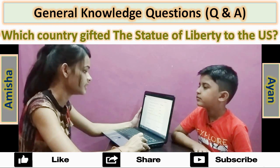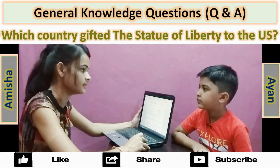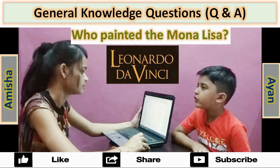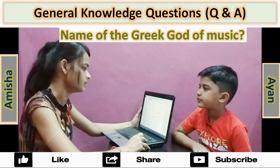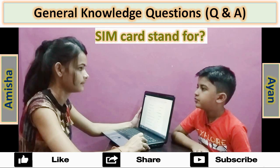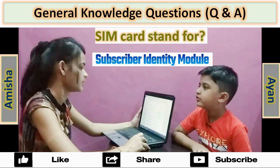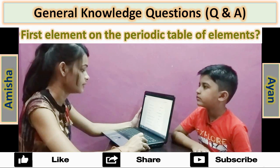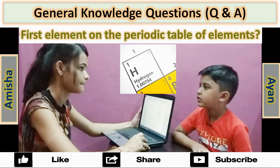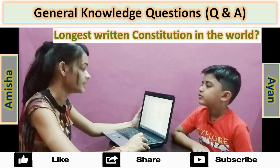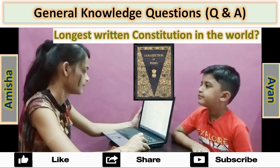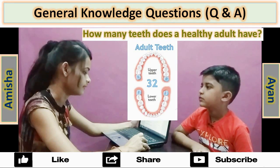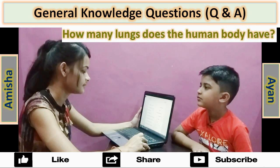Which country gifted the Statue of Liberty to the USA? France. Who painted the Mona Lisa? Leonardo Da Vinci. Name of the Greek god of music? Apollo. SIM card stands for? Subscriber Identity Module. WWW stands for? World Wide Web. First element on the periodic table of elements? Hydrogen. Longest written constitution in the world? India. Largest democracy in the world? India. How many teeth does a healthy adult have? 32.